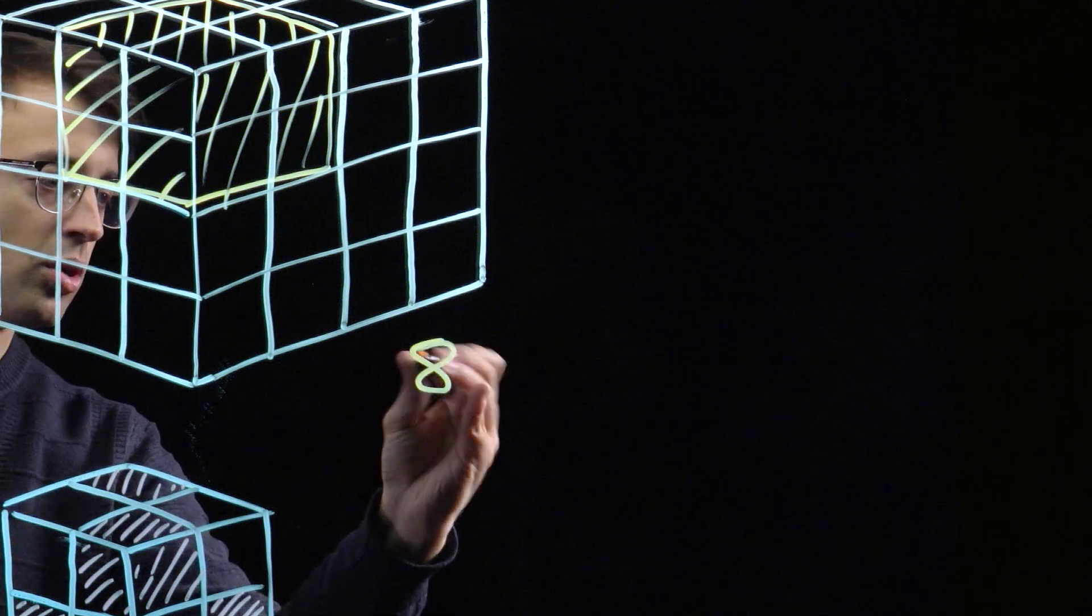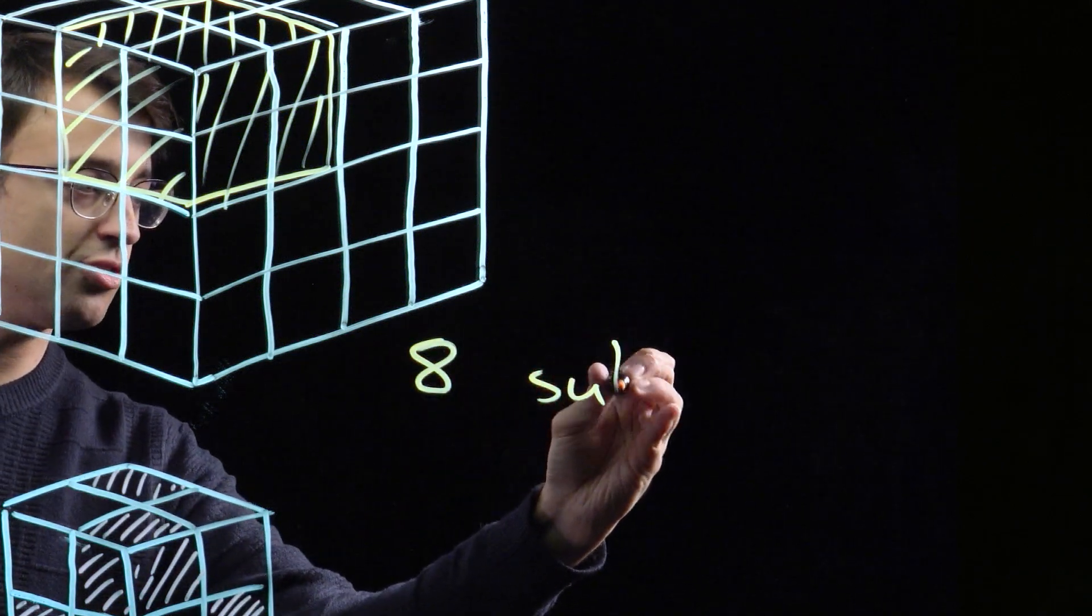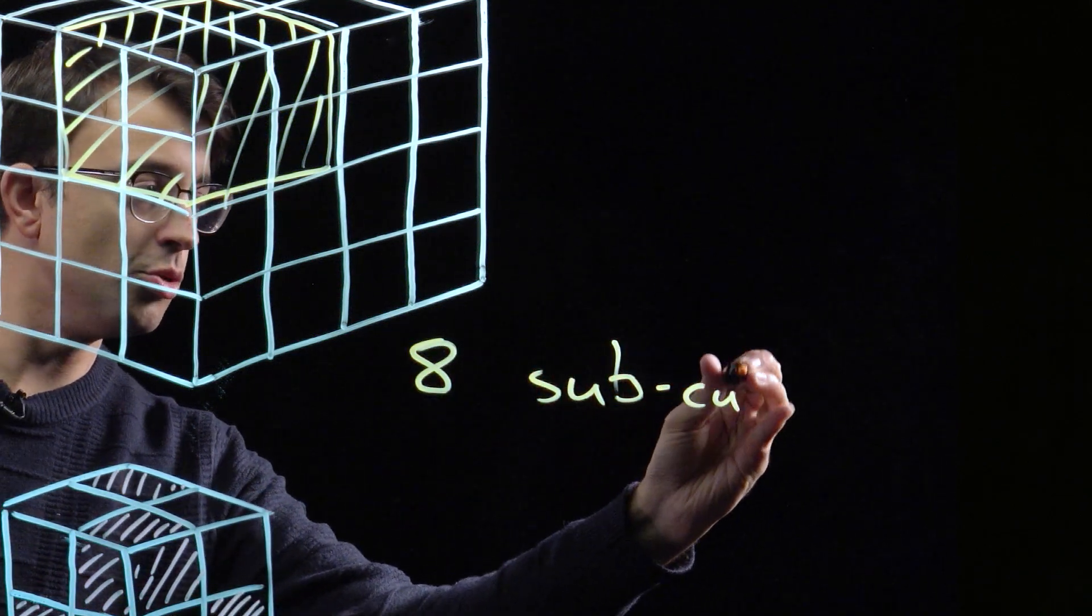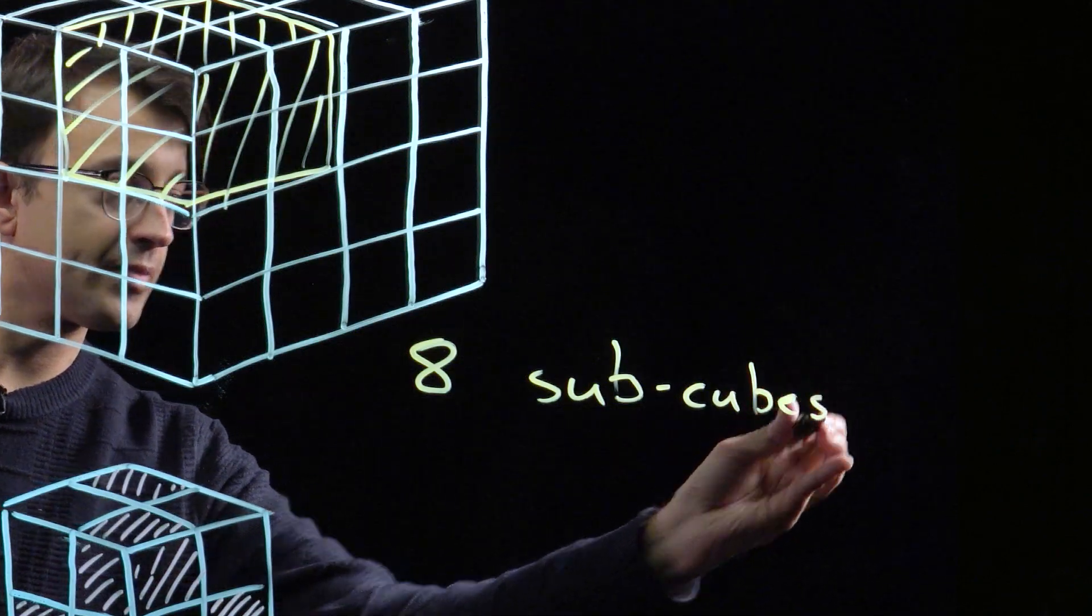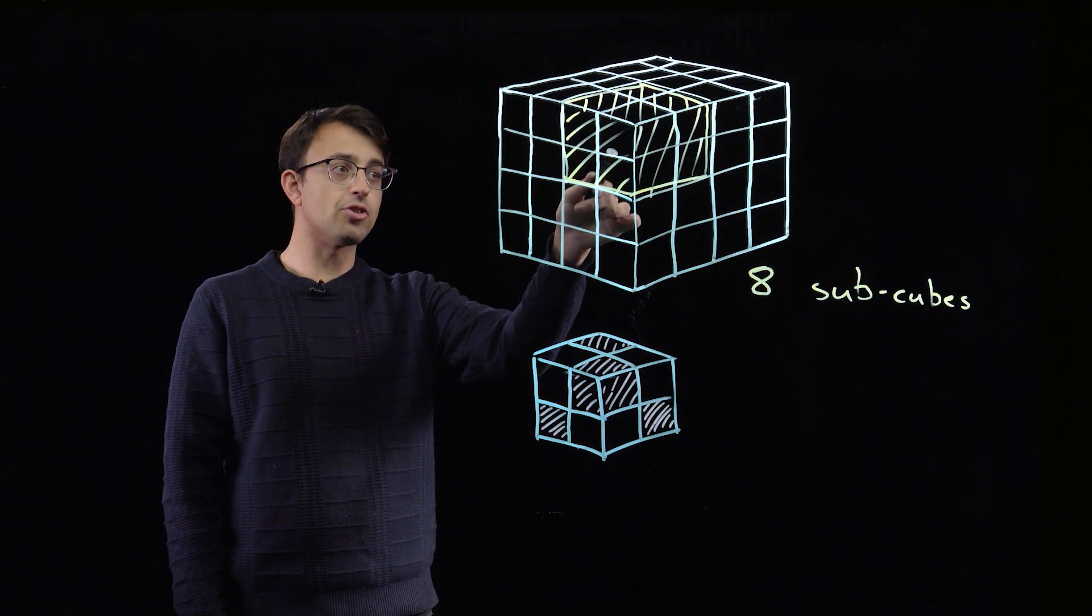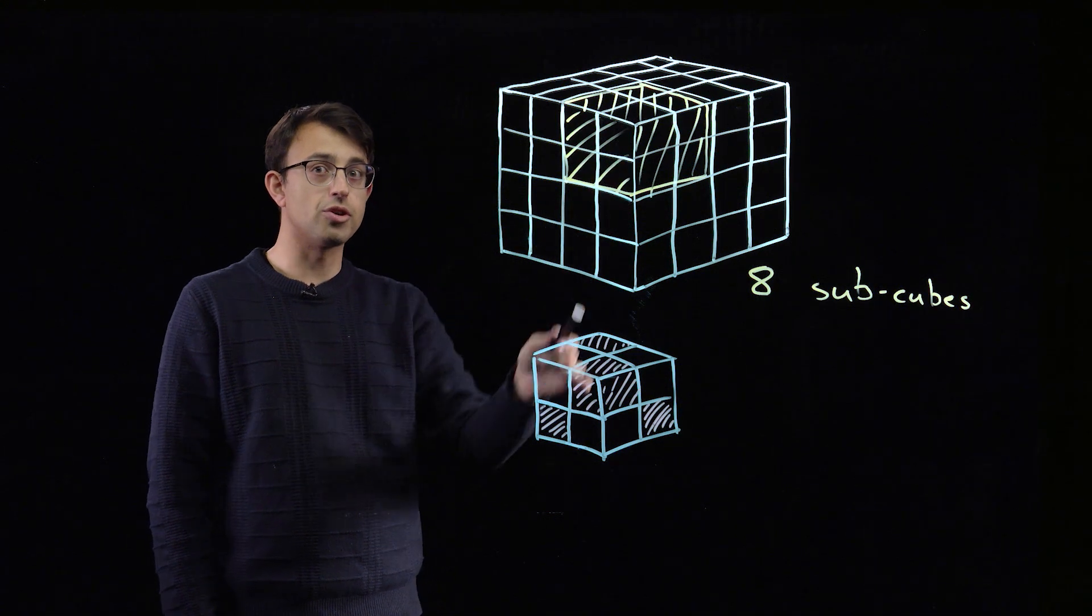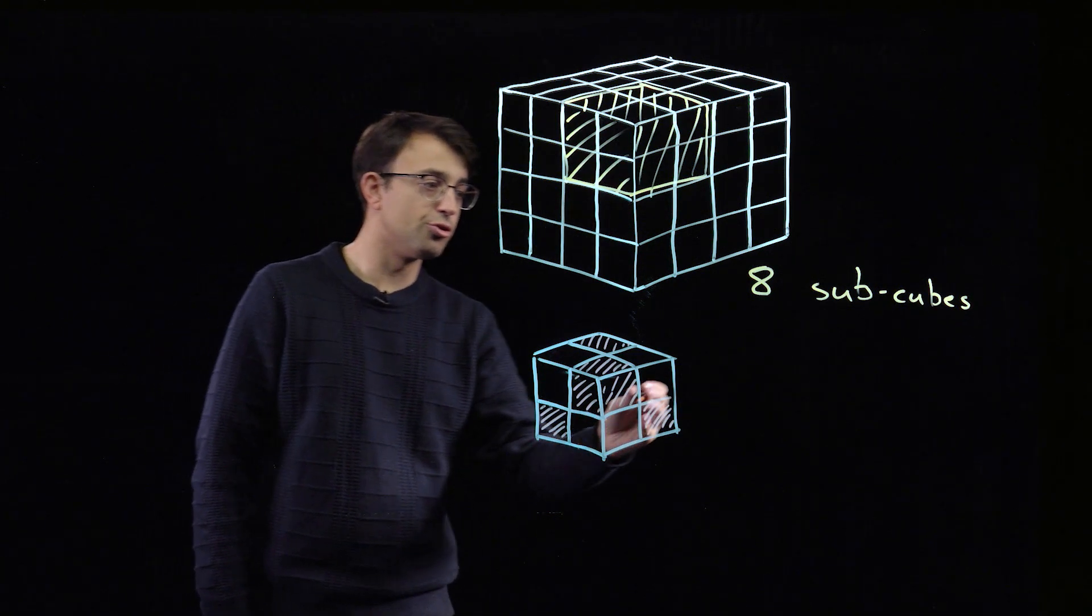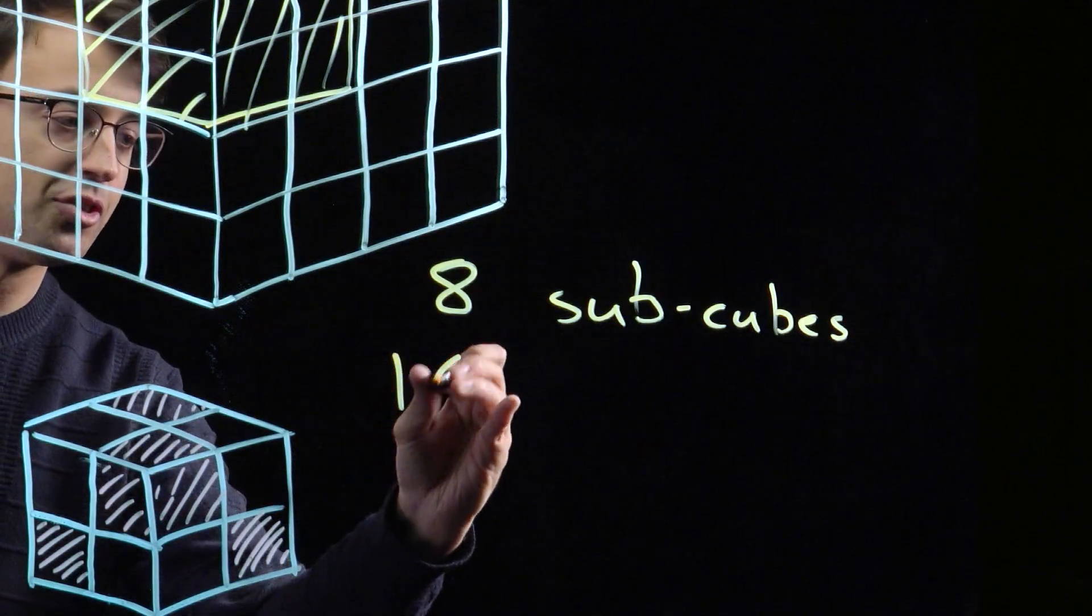We know we're going to have eight of these subcubes, and within each of the subcubes we can find a pair of the small cubes that are distance root 2 apart, and have the same flavour.